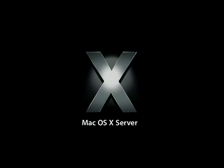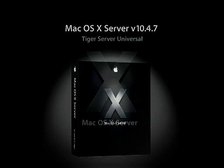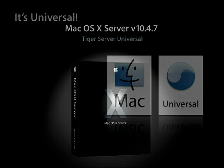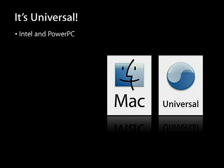And the first one is Tiger Server Universal. This is an update to the existing Tiger Server that we shipped today on PowerPC. And as the name says, it's universal. It runs on the new Intel boxes. It runs on the Mac Pro and the XServe, as well as the other Intel Macs. And it's actually the first version of the macOS 10 operating system that's universal in a single image.